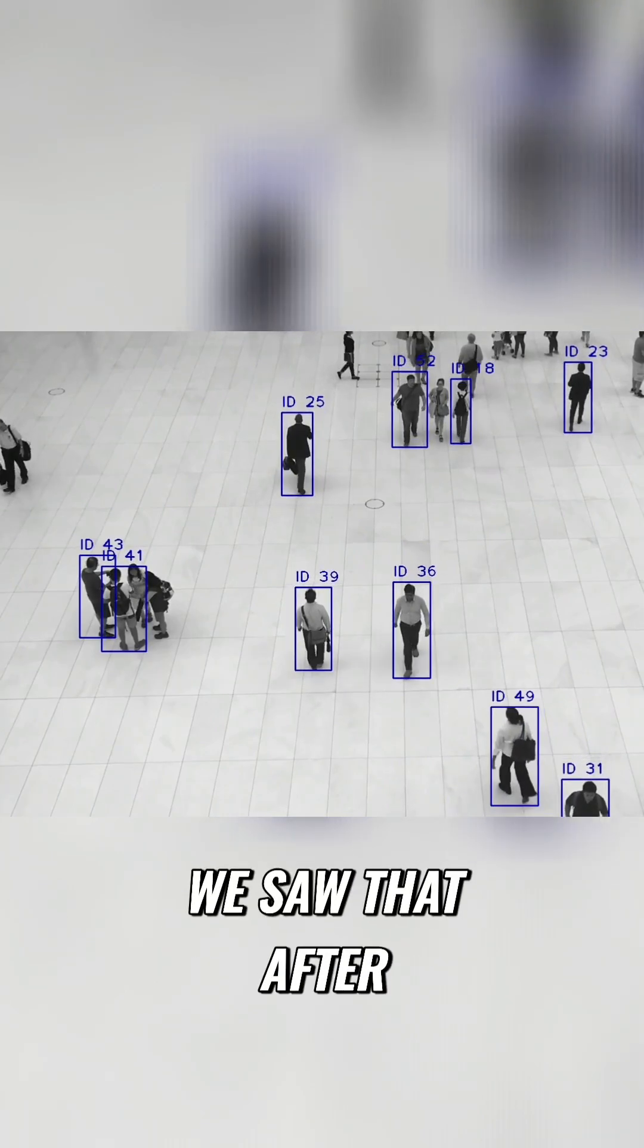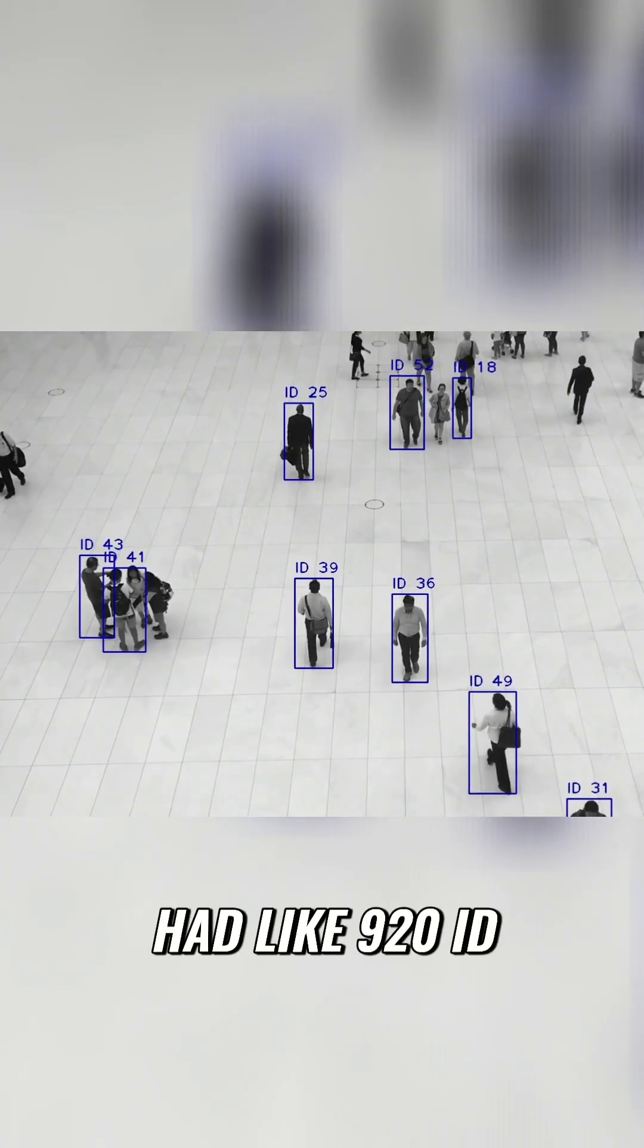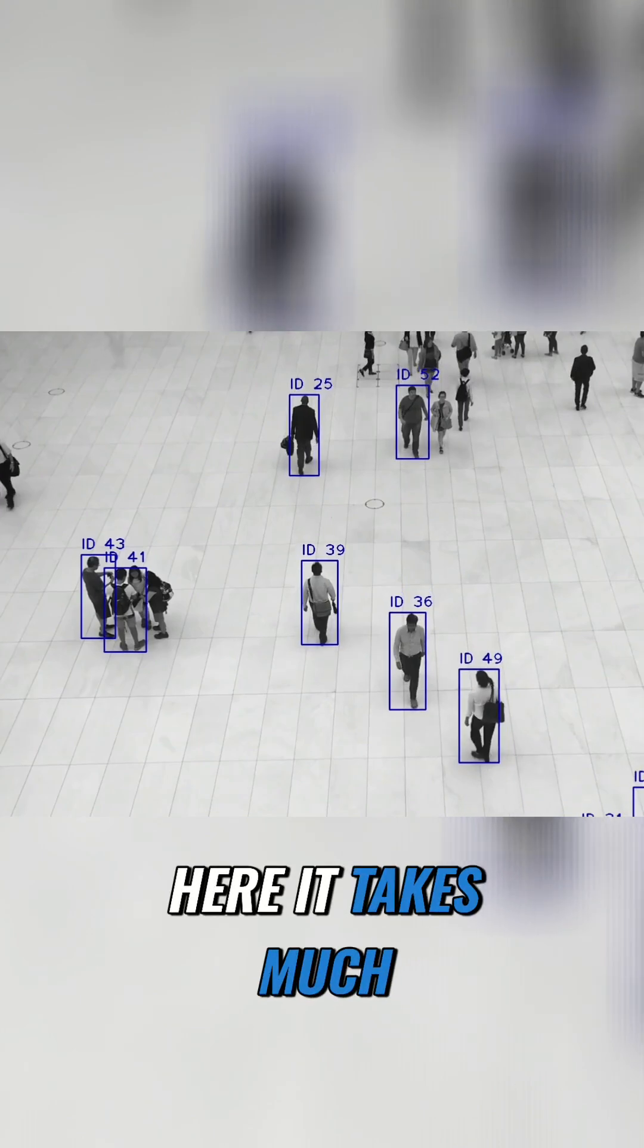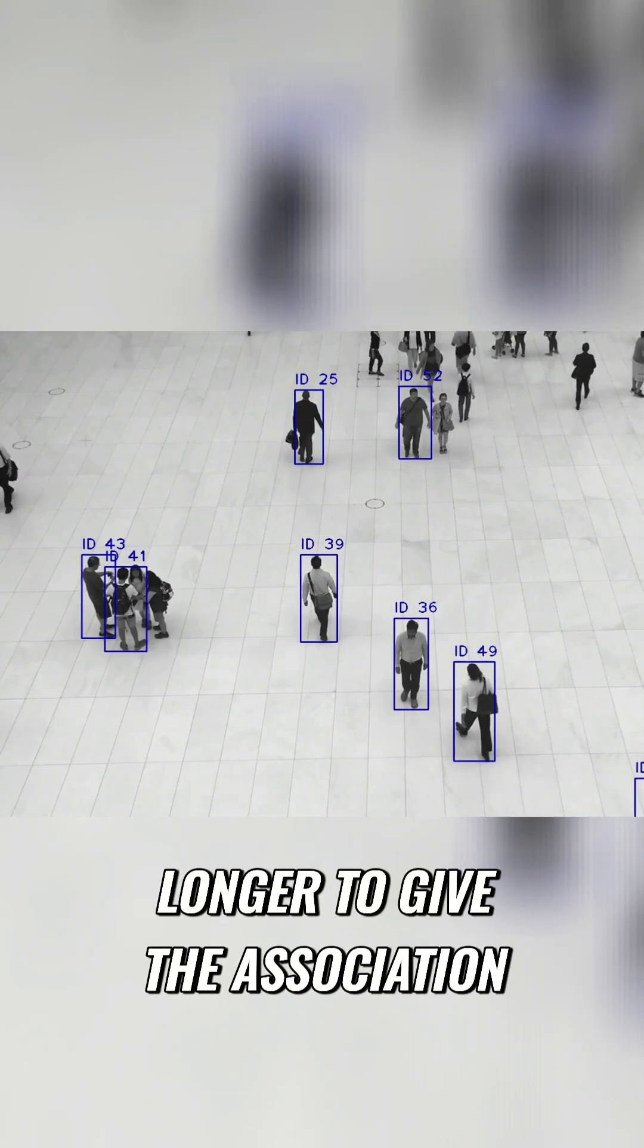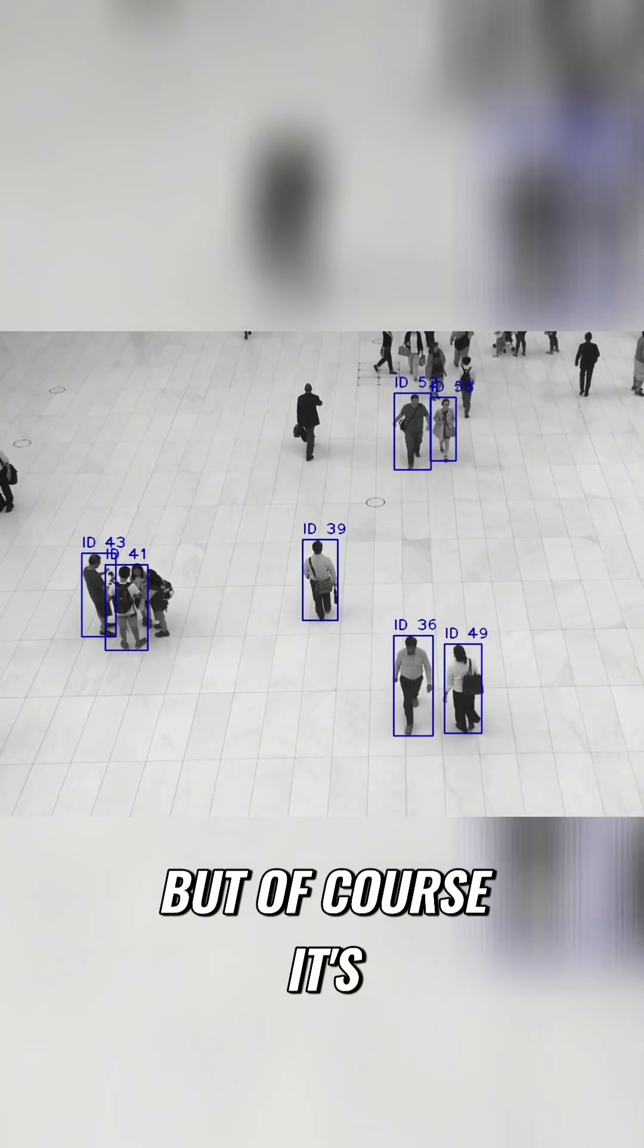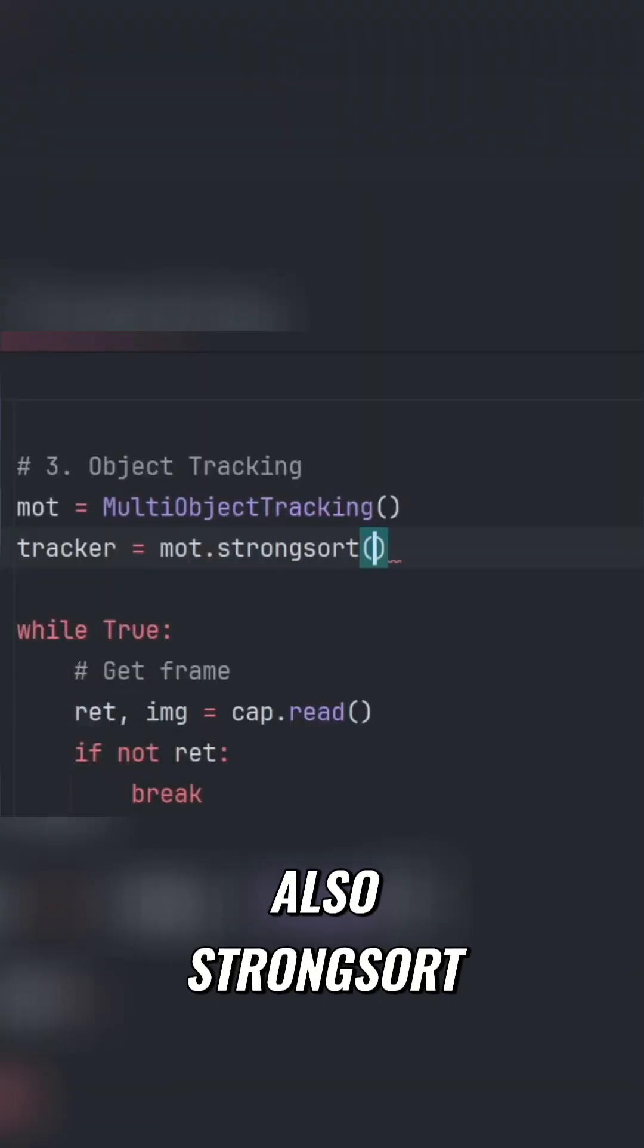We also saw that after a while, we had like 920 IDs here. It takes much longer to give the association, but of course, it's not working well. We will try now StrongSort.